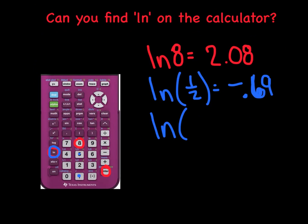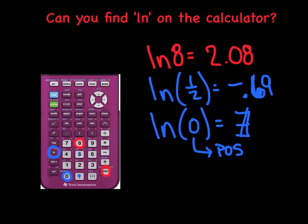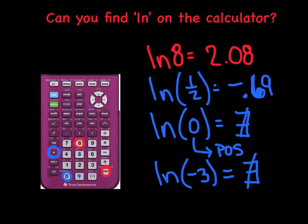Let's try the natural log of 0. Type natural log, then 0, hit enter. The calculator freaked out and gave us an error message. That corresponds to what we talked about regarding domain — the value inside the parentheses must be positive. It can't equal 0 and it can't be negative. We'll test that by typing in the natural log of negative 3, hit enter, and the calculator gives us an error message there too.